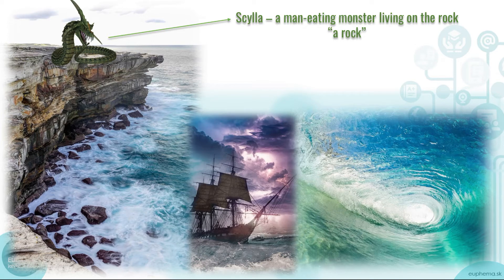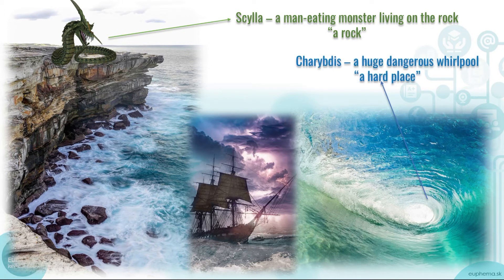The other dangerous, treacherous place was a huge whirlpool. You can imagine it can be really dangerous for a ship to pass. In the story its name was Charybdis — a huge, dangerous whirlpool. That's why in the idiom we say 'between a rock and a hard place.' If you are in a difficult situation, you can compare it to Odysseus's way home.